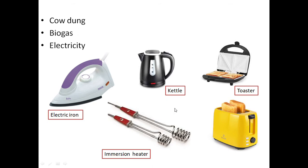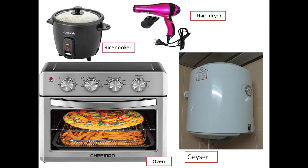Electricity can also be used to generate heat. In heat-generating appliances, electricity is converted to heat energy. These include an electric iron, electric kettle, toaster, and immersion heater. Other examples are a rice cooker, hair dryer, and oven — they all convert electricity to heat energy.